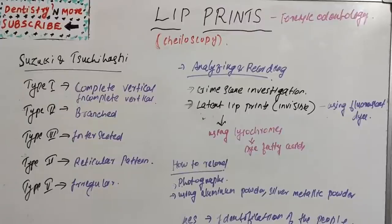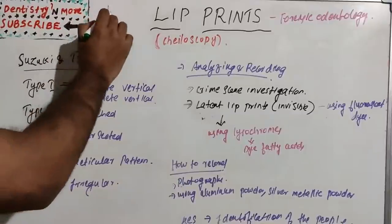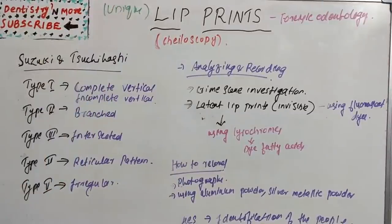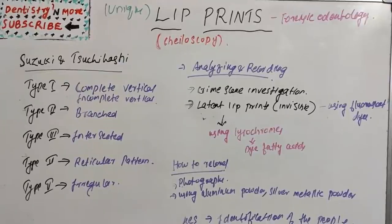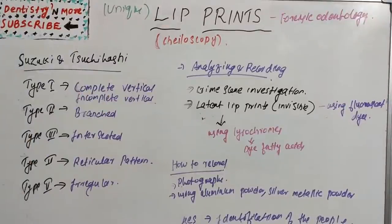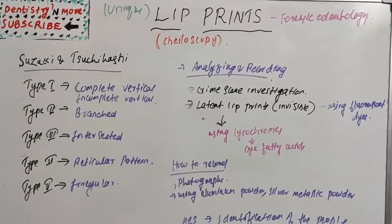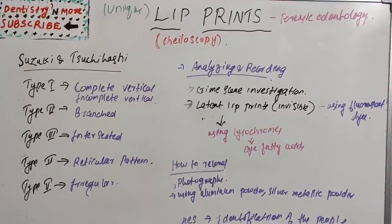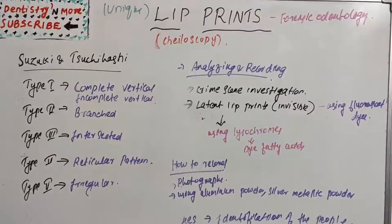Lip prints are very unique, just like our thumb impressions. Lip prints are unique to one person, except in monozygotic twins. Unlike bite marks — where similar dentition may be found in another person — lip prints are far more unique. These lip grooves are permanent and unchangeable. It is possible to identify lip patterns as early as the sixth week of intrauterine life.